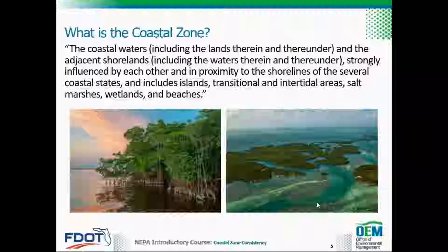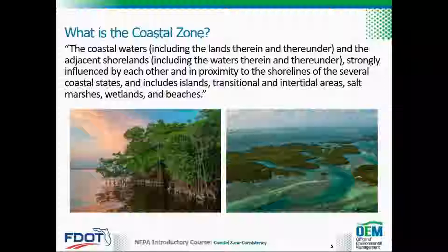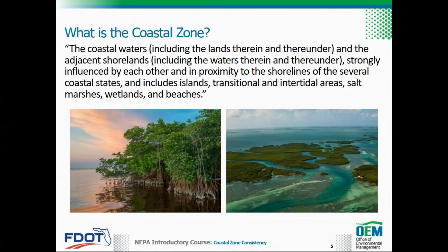According to the United States Code of Federal Regulations, or CFR, the coastal zone is comprised of the coastal waters, including the lands therein and thereunder, and the adjacent shorelands, including the waters therein and thereunder, strongly influenced by each other and in proximity to the shorelines of the several coastal states, and includes islands, transitional and intertidal areas, salt marshes, wetlands, and beaches. This definition applies to all areas in the U.S. that meet these parameters.